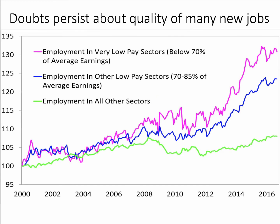There's a wider debate about the types of jobs people are getting. Research shows a skew of employment in the UK increasingly towards jobs offering relatively — often very — low pay. The index of employment in very low pay jobs, offering less than 70% of average earnings (around £28,000 a year in the UK), has gone up significantly by about 30%. Employment in other low-paid sectors has risen by about 25%, compared to employment generally, which is around 10% higher than it was in 2000.